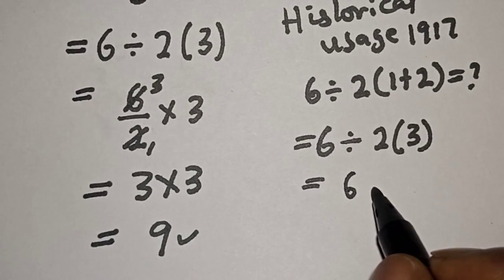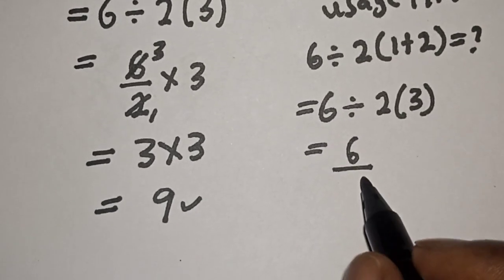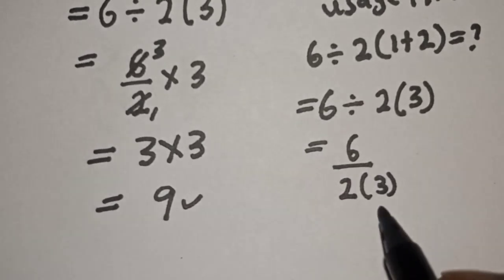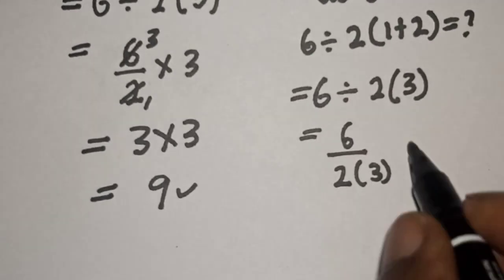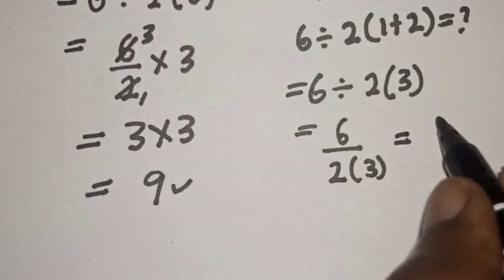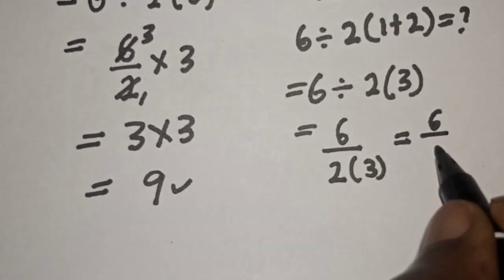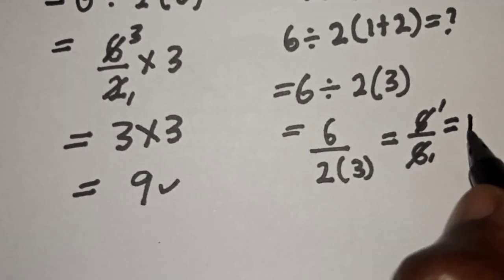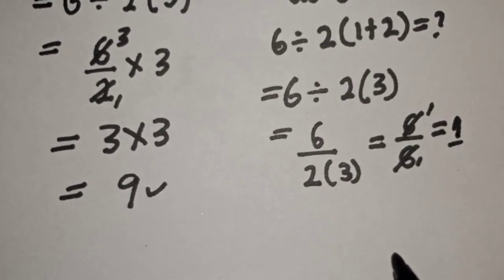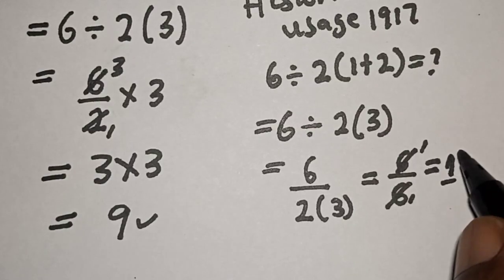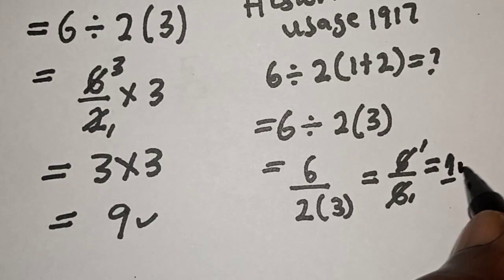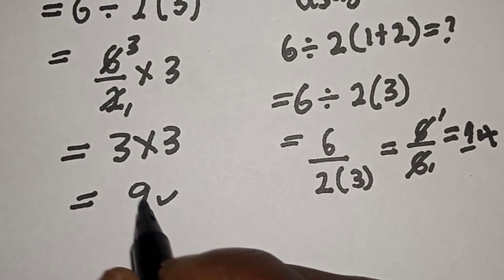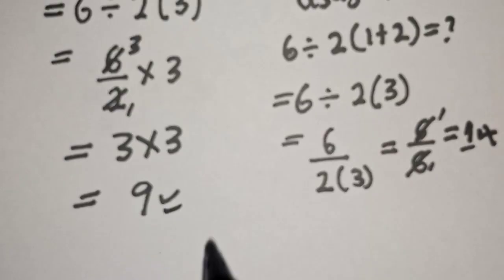equal to 6 over 2 bracket 3, and this is equal to 6 over 6, which is equal to 1. But this method is not valid again, so this is wrong. Our current answer is 9.